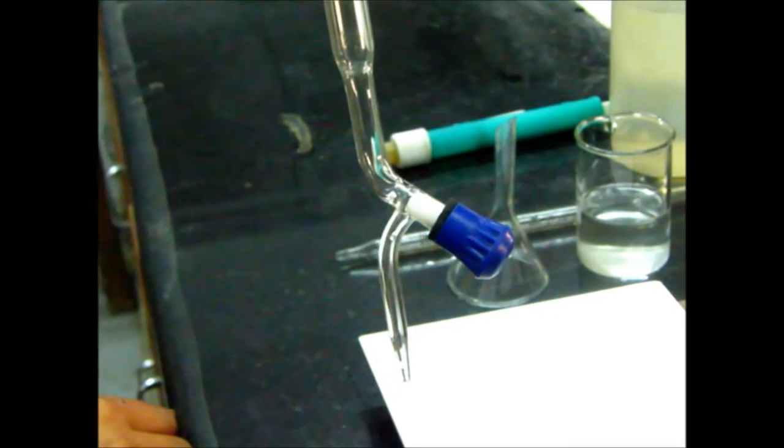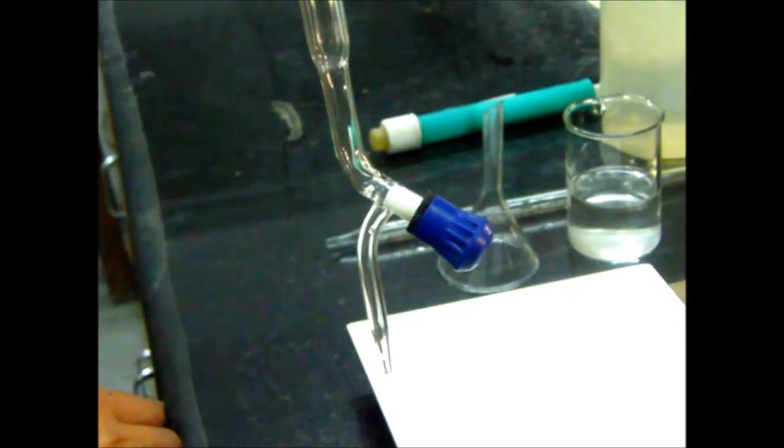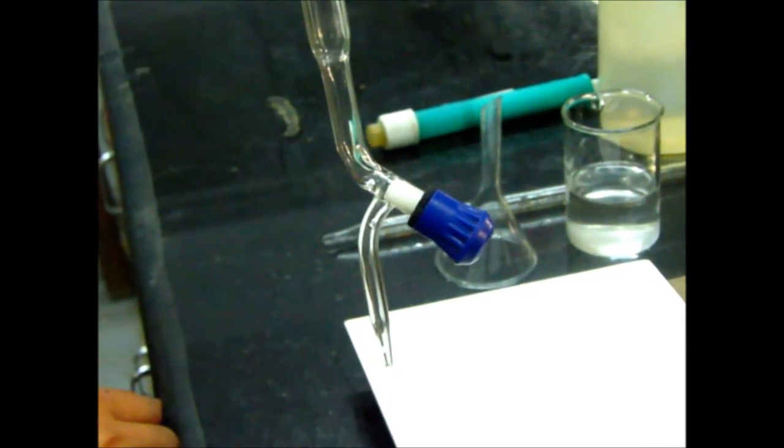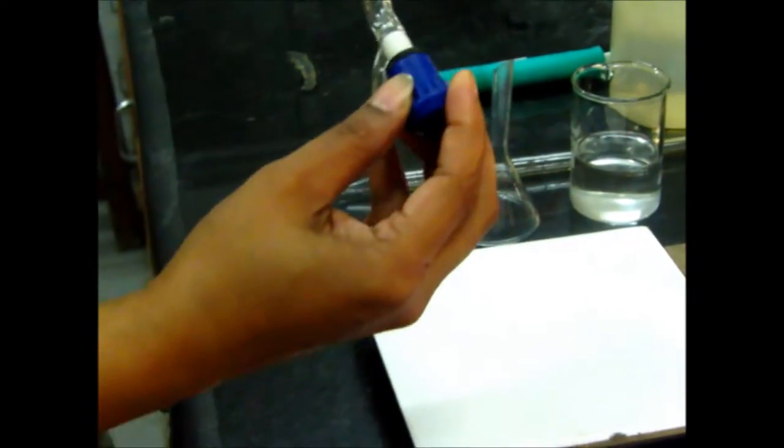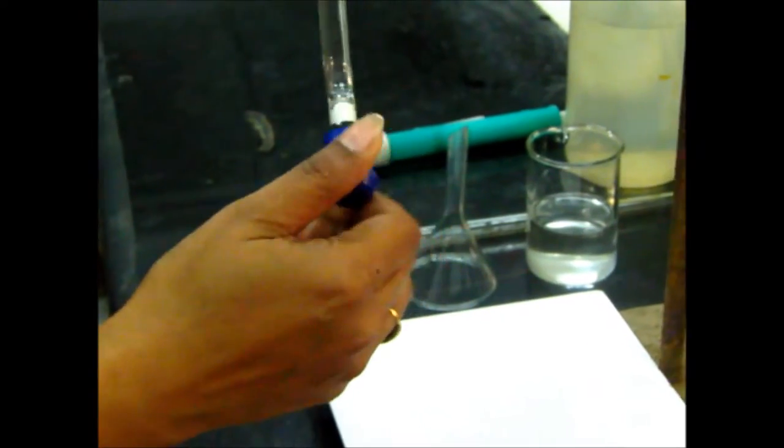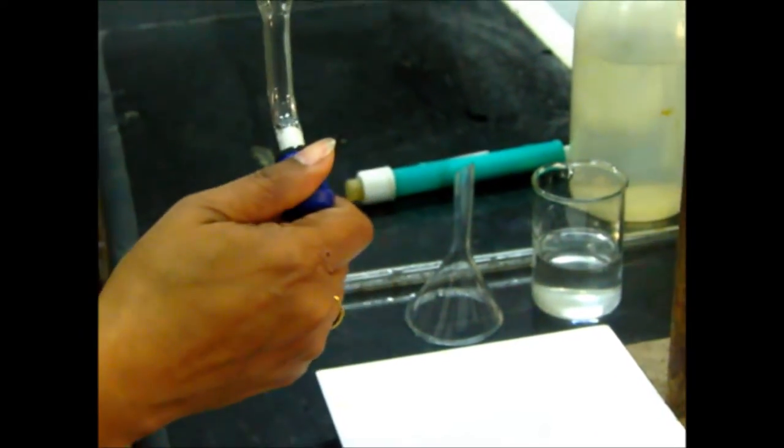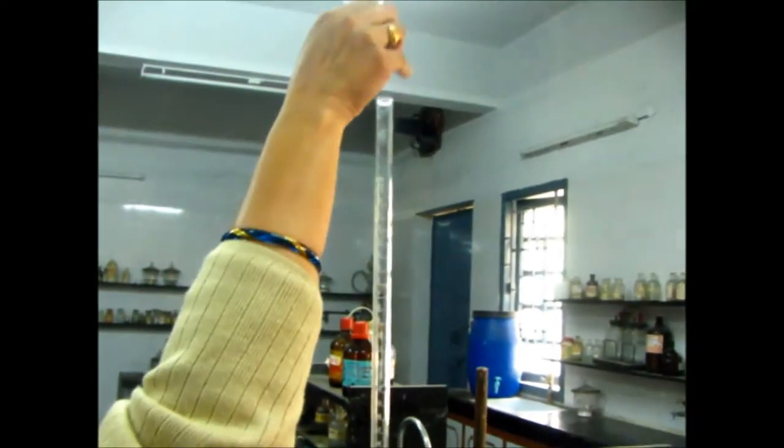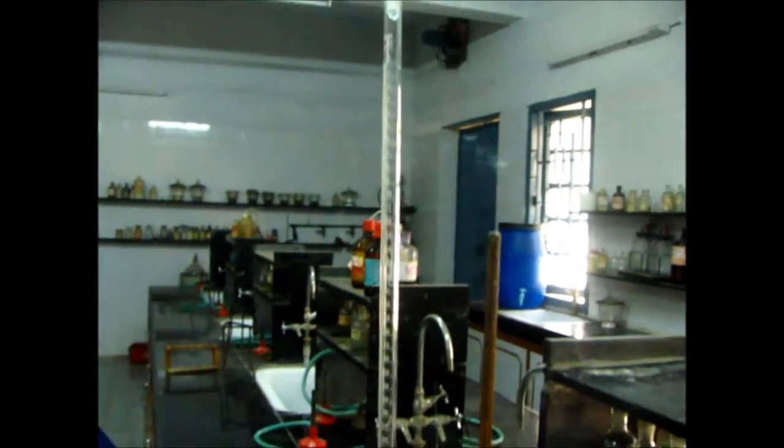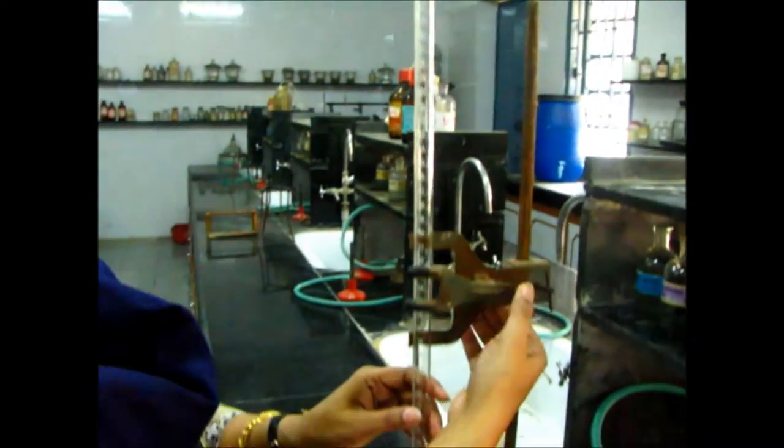Commonly used burets in labs are of 50ml capacity with a least count of 0.1ml. To fill a buret, close the nozzle and adjust it on the clamp stand. Now place a funnel on the top open end of the buret. Lower the buret if it is much above your height.